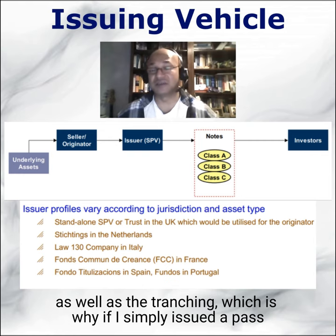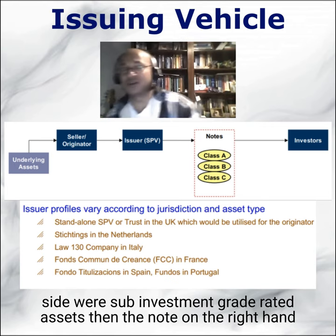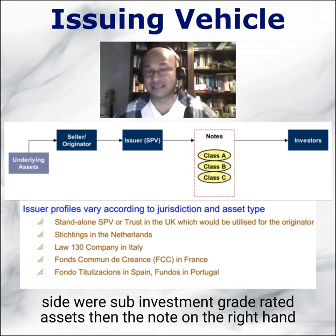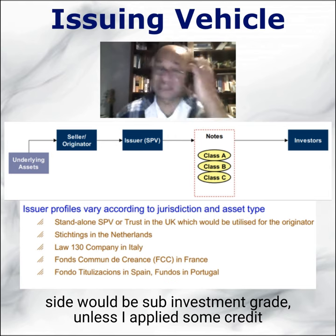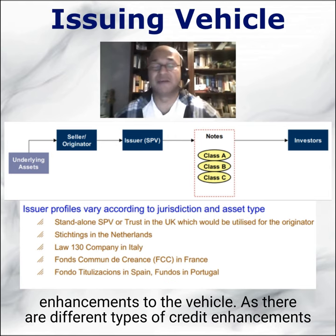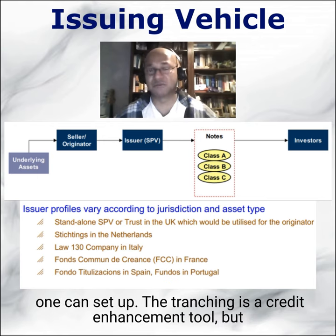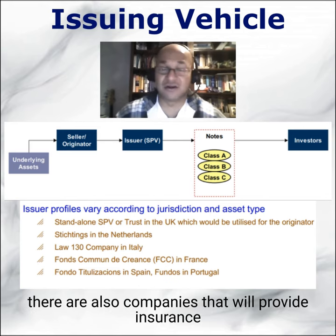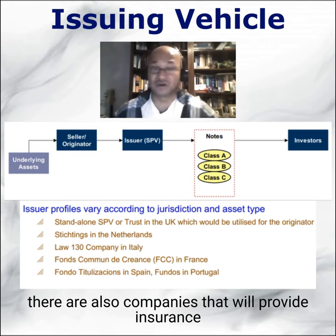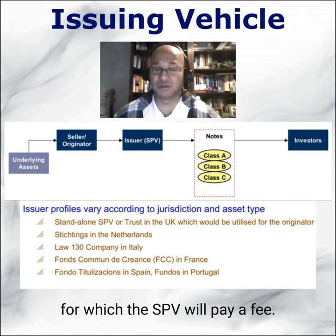If I simply issued a pass-through note — one class of security — where the left-hand side had sub-investment grade rated assets, then the note on the right-hand side would also be sub-investment grade unless I applied some credit enhancements to the vehicle. There are different types of credit enhancements. Tranching is a credit enhancement tool, but there are also companies that will provide insurance protecting the note holder if there's any default in the underlying assets, for which the SPV will pay a fee.